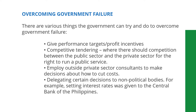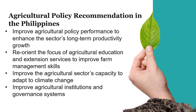There are various things the government can try to overcome government failure: give performance targets and profit incentives; competitive tendering with competition between public and private sectors for the right to run public services; employ outside private sector consultants to make decisions about how to cut costs; and delegate certain decisions to non-political bodies, for example, setting interest rates was given to the Central Bank of the Philippines.